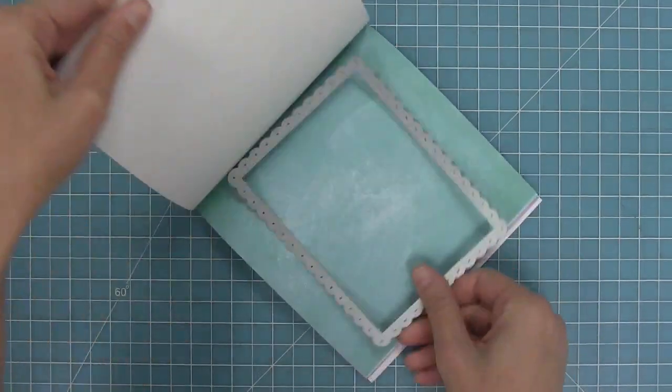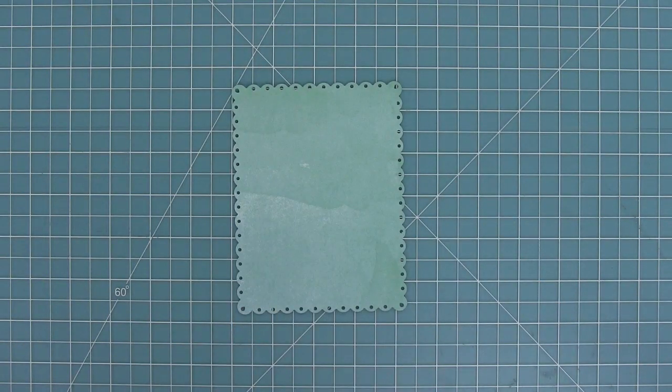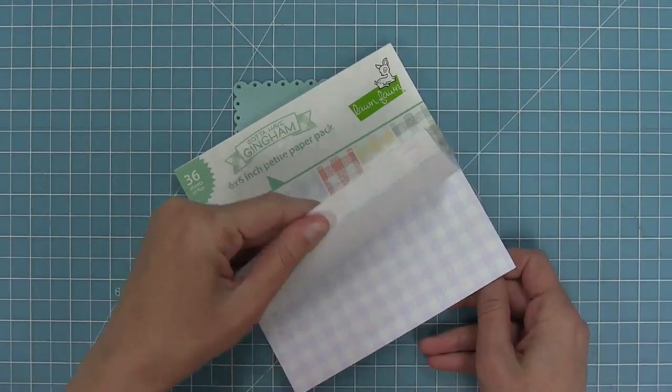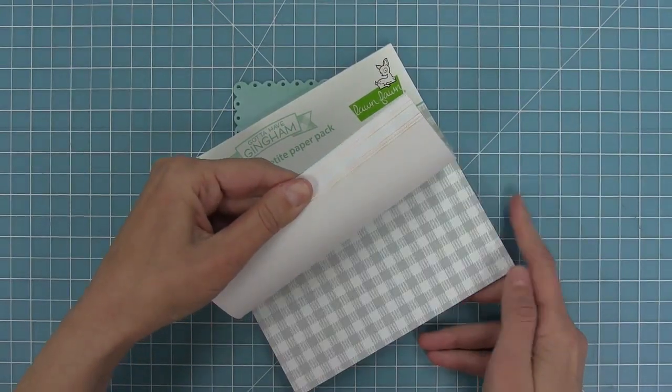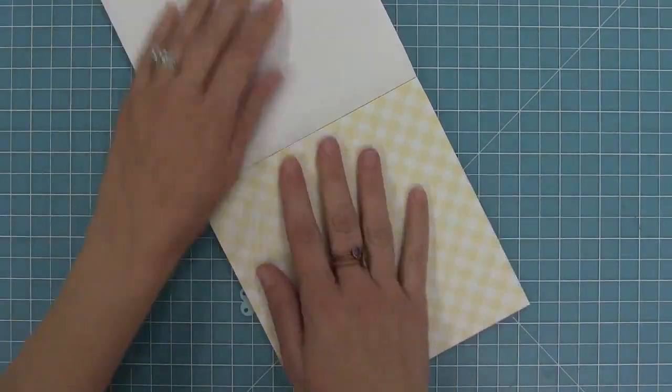I have my watercolor wishes paper out and I'm going to die cut that with a fancy scalloped rectangle. I'm then going to take the new gotta have gingham paper here and I'm going to find this really pretty yellow gingham.